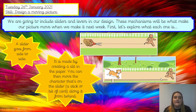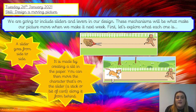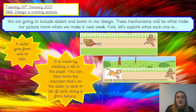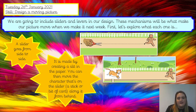You can move the character — we've got a cat here — and we've put that on a stick or a piece of card or another piece of paper. You can move your character along the slider, so forwards and backwards or side to side, from behind that piece of paper. So that's our slider that goes from side to side.